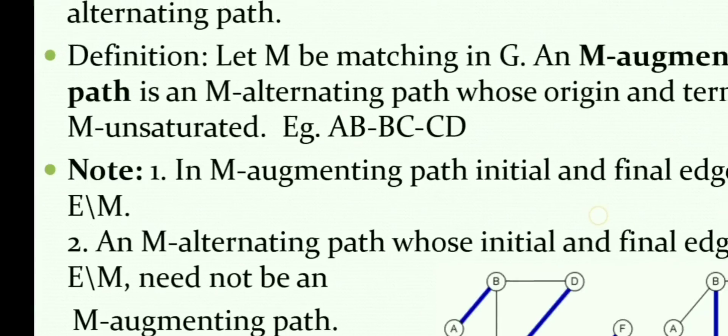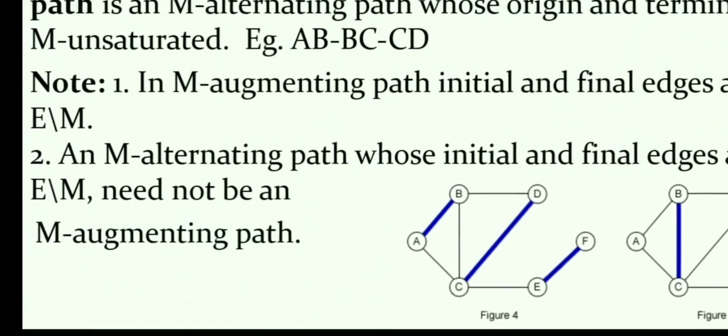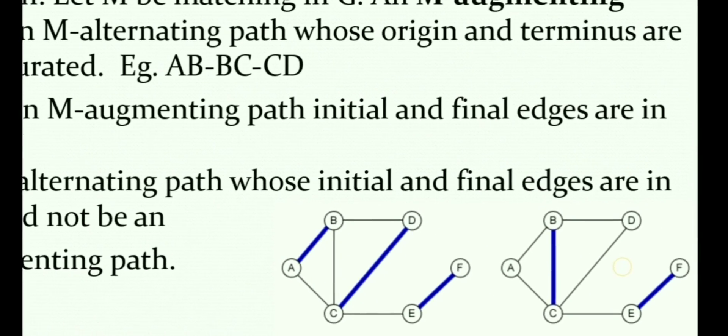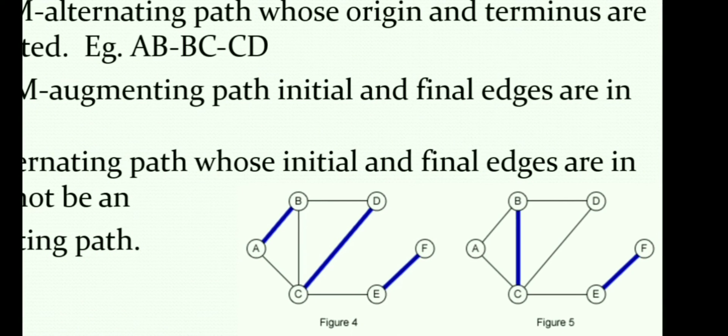Let us clarify: the path is A-B, B-C, C-E, E-F. AB is not in the matching, that is it is in E minus M. BC is in M. CE is in E minus M. Then EF is in M.